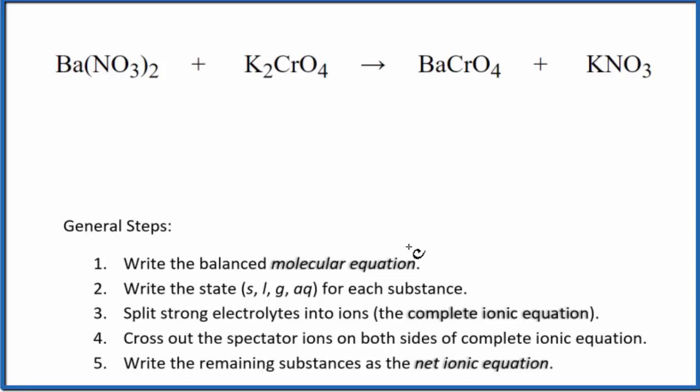To do this, we first need to balance the molecular equation. As we look at this, we see we have two nitrates right here and only one over here. If we put a 2 in front of the KNO3, we'd have two nitrates, two potassiums. That's okay.